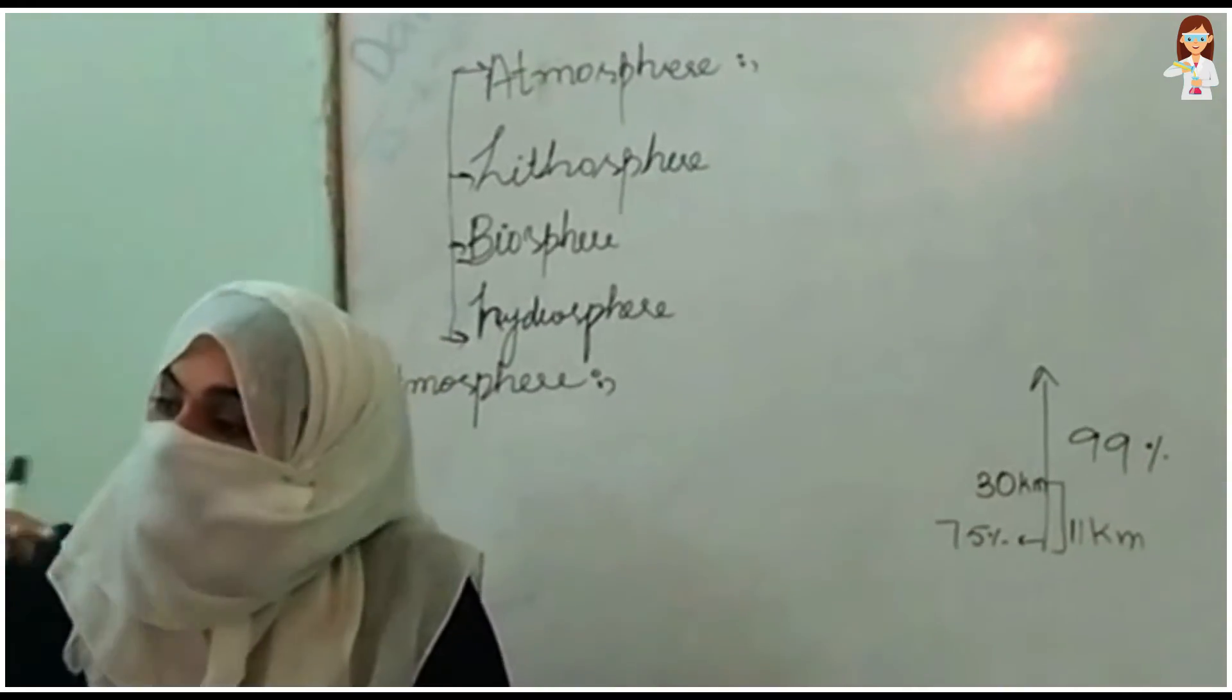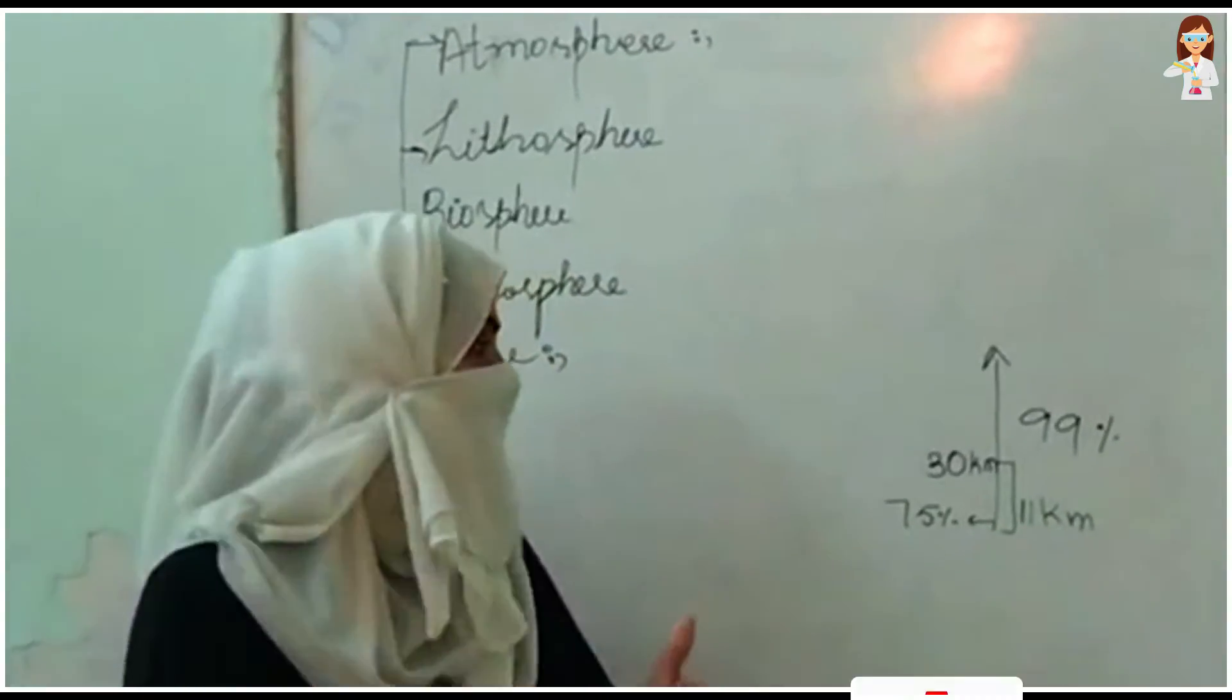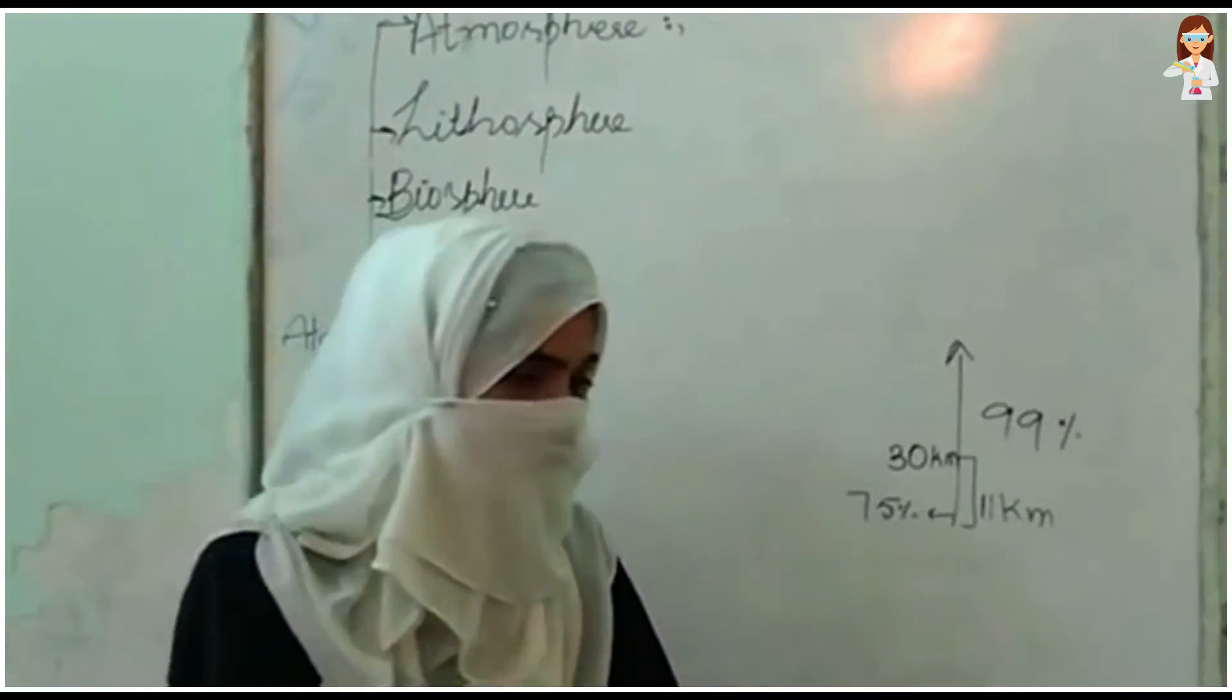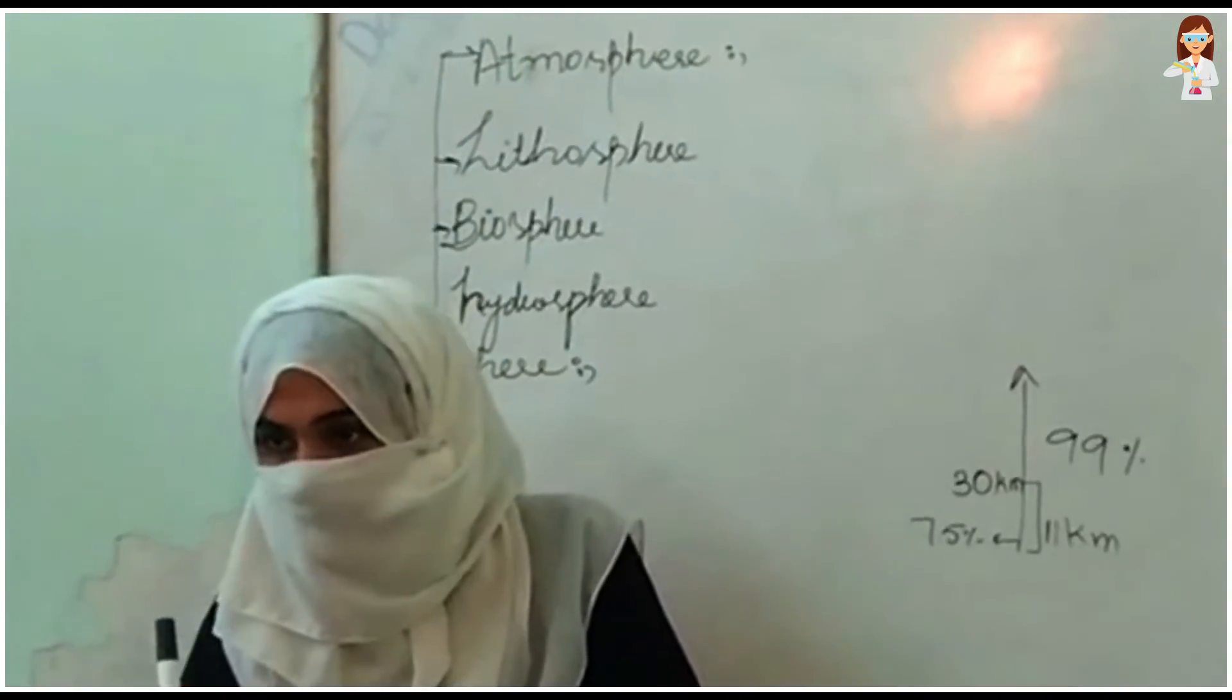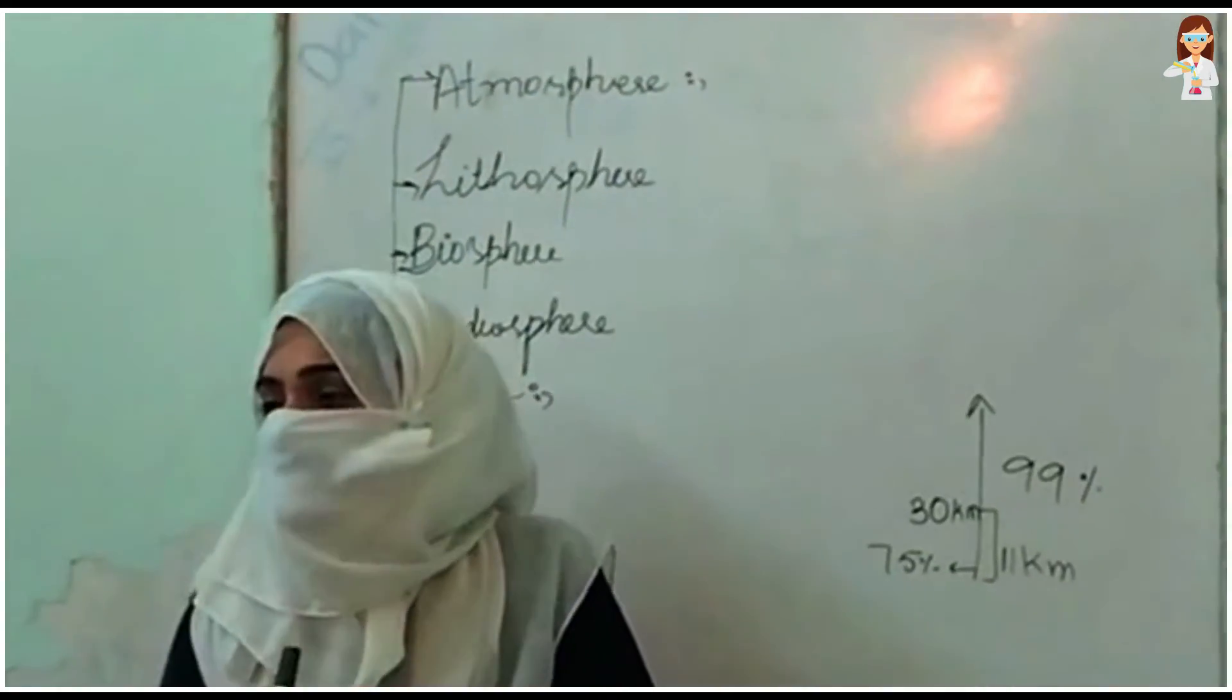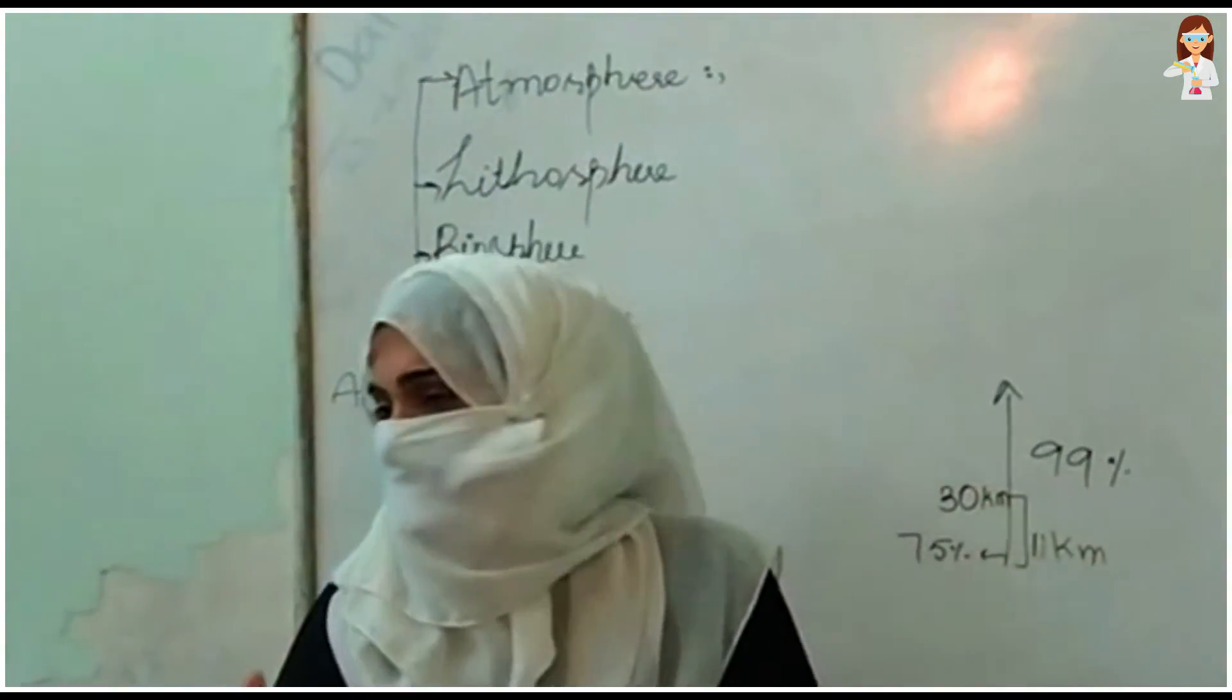About 99% of the atmosphere is within 30 km, and the first 11 km contains about 75%. As we go up, the atmospheric pressure will change and the temperature goes down, very low temperature. Why? Because the gas composition and concentration is less. If we look at the atmosphere, we have a percentage of gases.